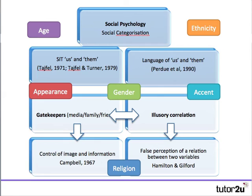Tajfel's research into social identity theory through the minimal groups paradigm shows how we create 'us and them' groups with the minimum of provocation. There was a previous theory — Sherif's — that it was actually fighting for resources that put people in competition and created 'us and them.' However, Tajfel and Turner showed it was just thinking of ourselves as 'us' and others as 'them' that was quite enough. Perdue et al. looked at how the language of 'us and them' is enough to positively or negatively skew our thoughts.